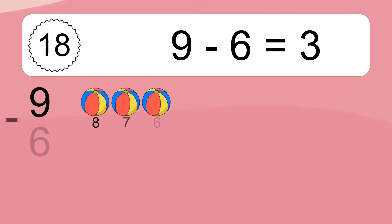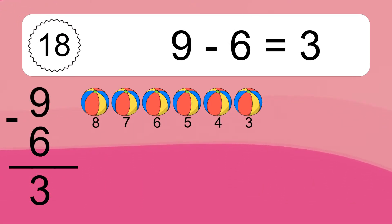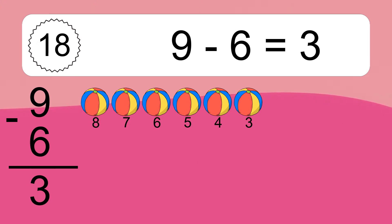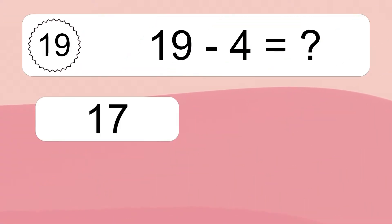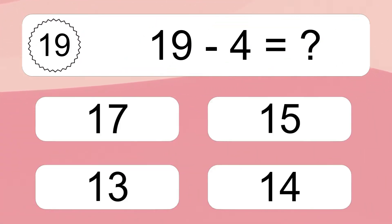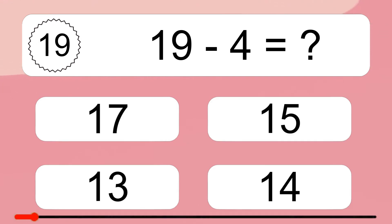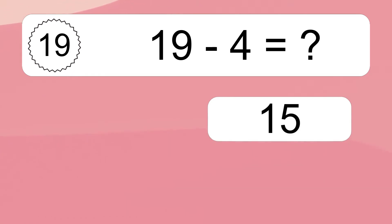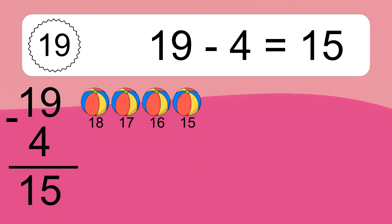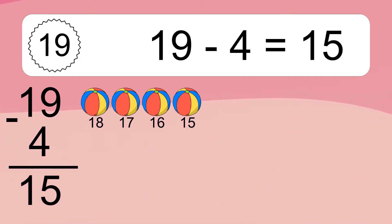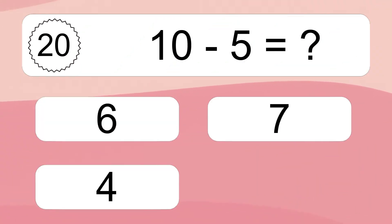9 minus 6 equals what? 9 minus 6 equals 3. Let's count it: 8, 7, 6, 5, 4, 3. 19 minus 4 equals what? 19 minus 4 equals 15. Let's count it: 18, 17, 16, 15.